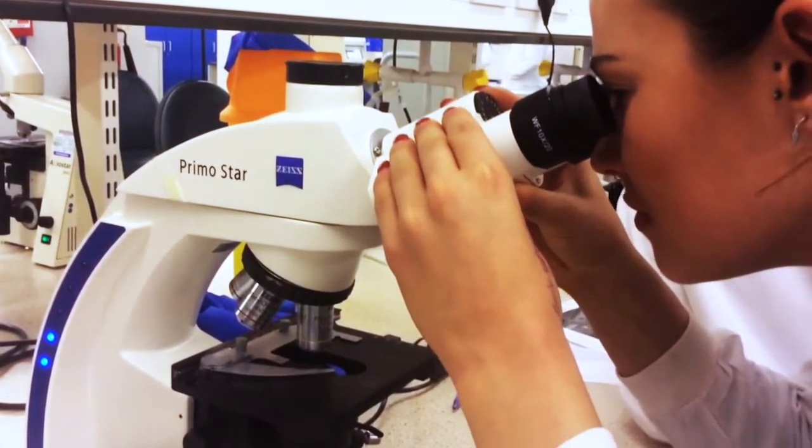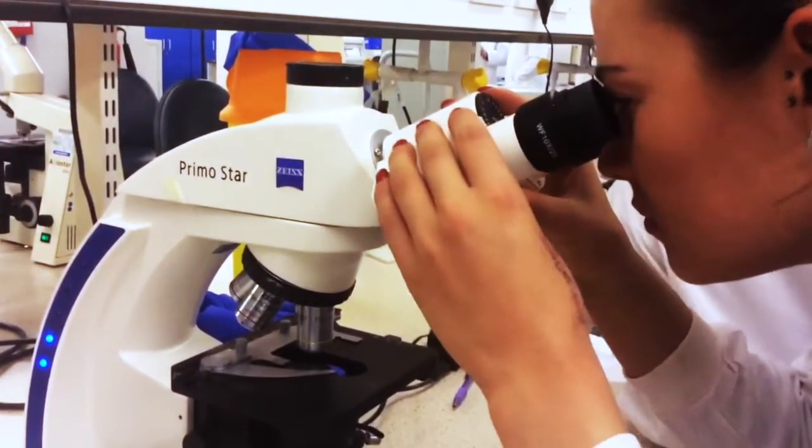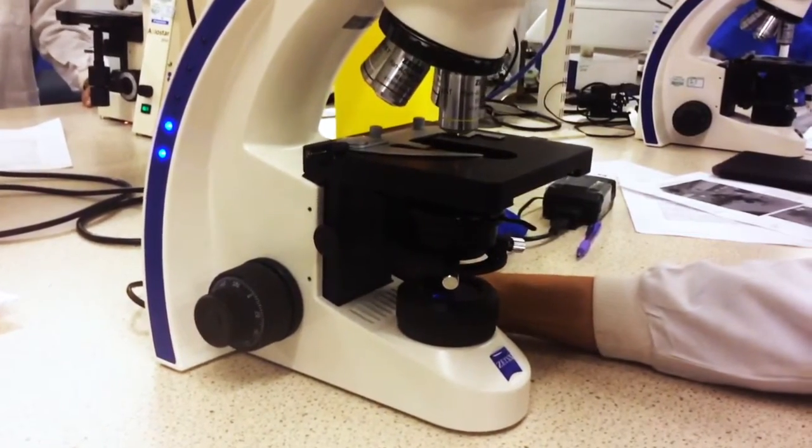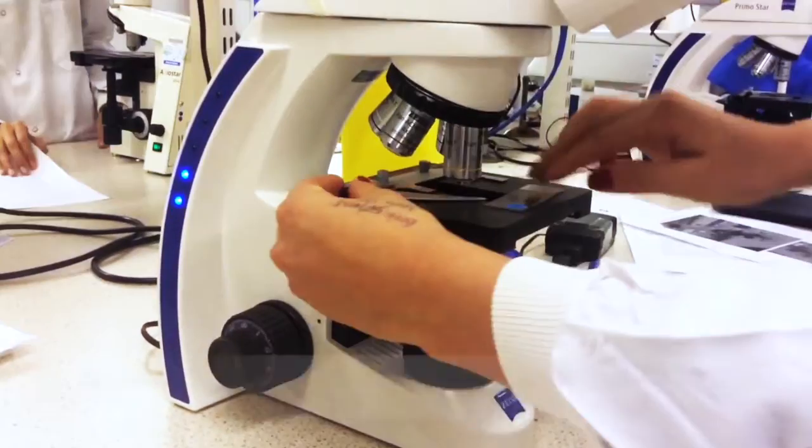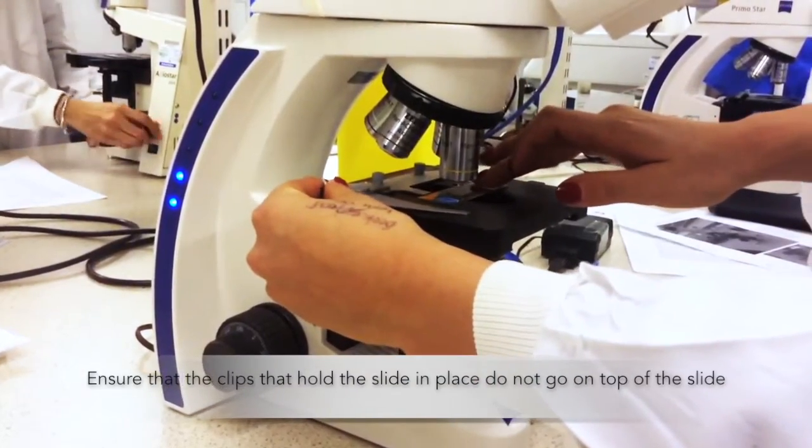To obtain a single circular view, adjust the eyepiece separation. Watching from the level of the stage, bring the stage up towards the objective lens. Then place the slide mounted preparation on the stage.